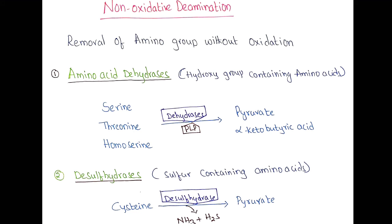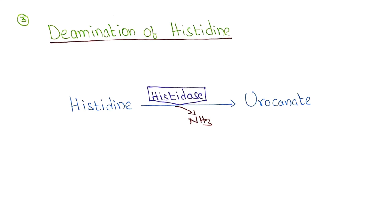One more example is histidine is non-oxidatively converted into urocanate by the reaction of enzyme histidase.